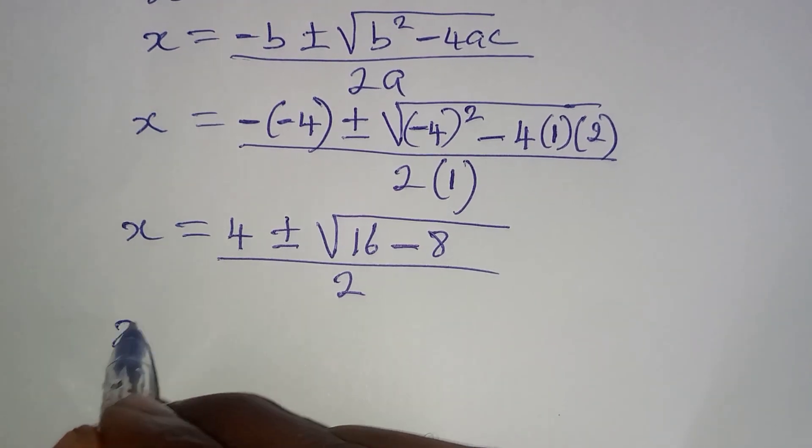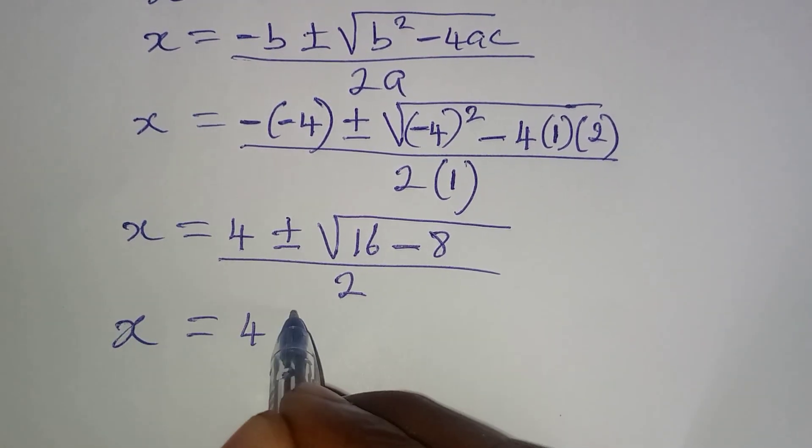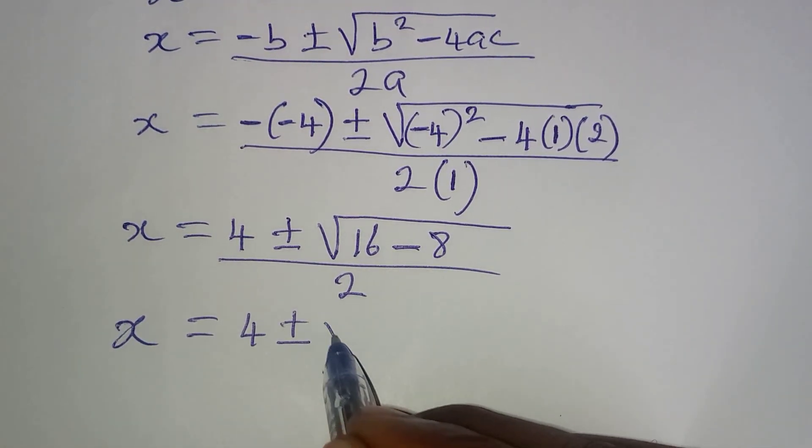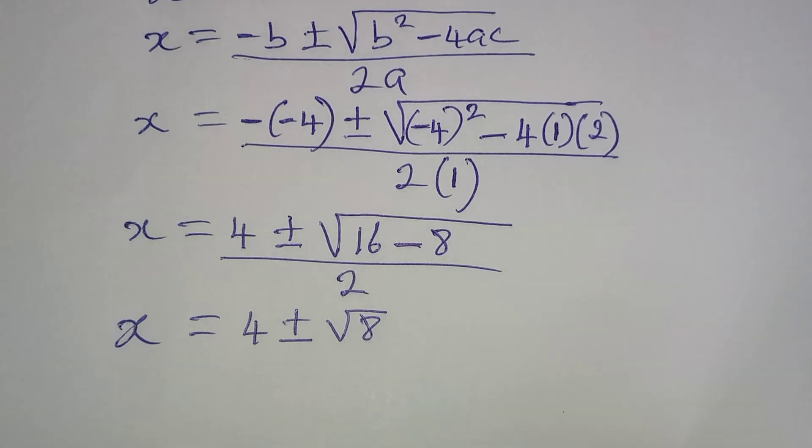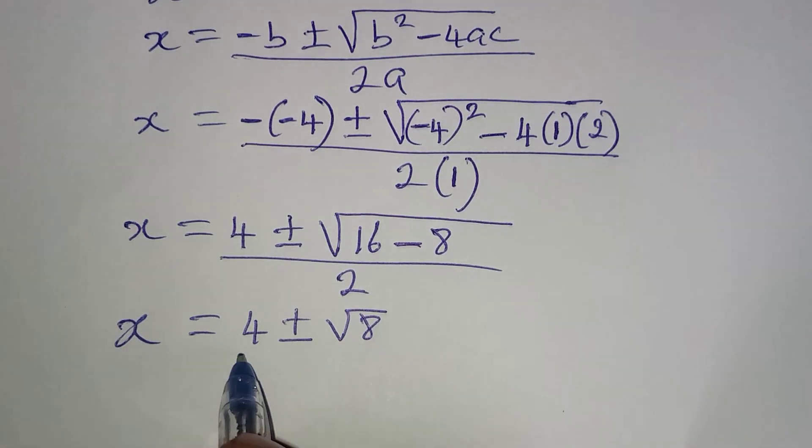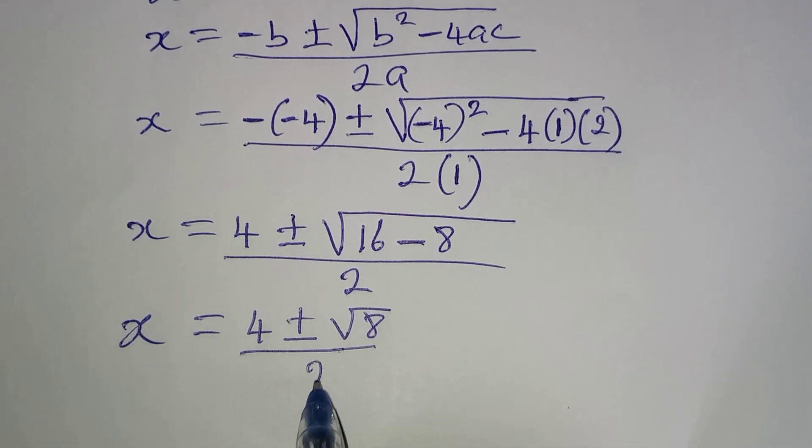So if we continue, x will be 4 plus or minus, we'll have 8 in this bracket. And this is all over 2.